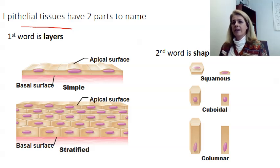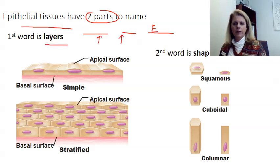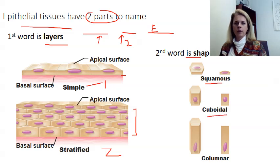The last thing covered in this video is how to name epithelial tissues. Epithelial tissues have three naming parts. The last word is always 'epithelia.' The first word comes from the layers — how many layers of cells make up the tissue. If it's one layer, we say 'simple'; if it's two or more, we say 'stratified.' The second word comes from the shape: flat cells are 'squamous,' square cells are 'cuboidal,' and tall skinny cells are 'columnar.' So one layer of flat cells is simple squamous, and two or more layers of flat cells is stratified squamous.